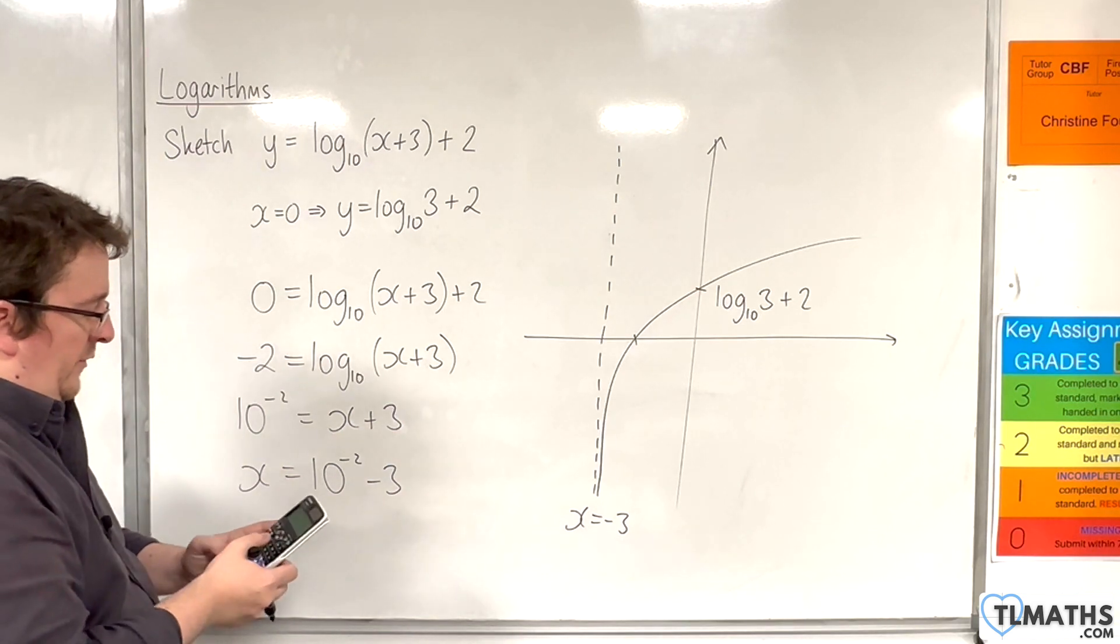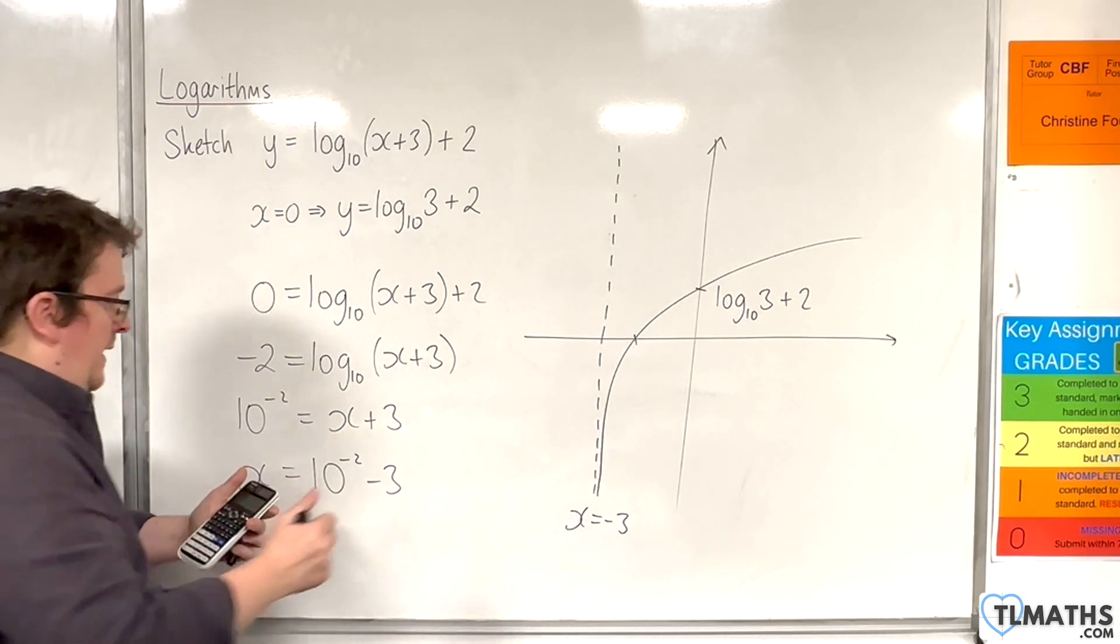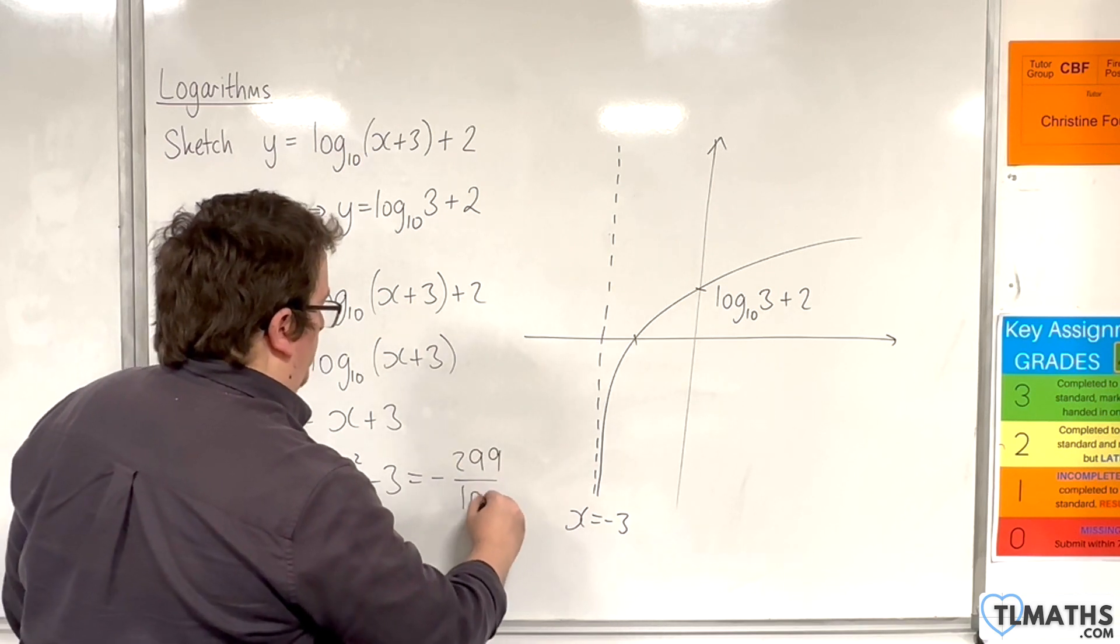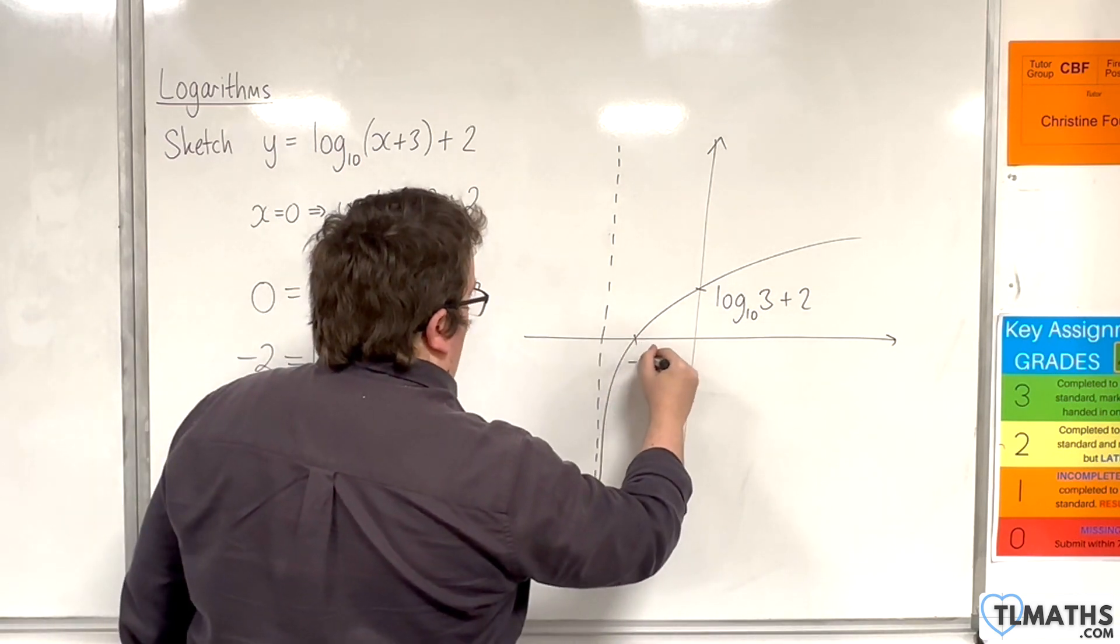So 10 to the power of minus 2, take away 3, is minus 299 over 100. And so that is that point there.